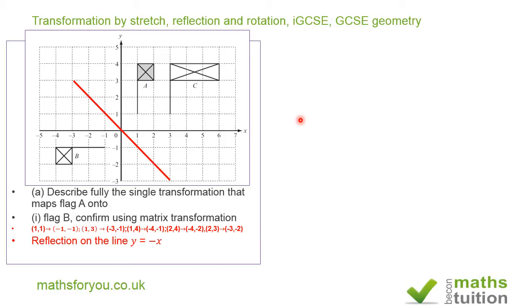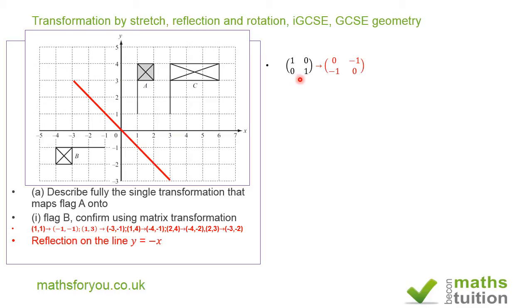To confirm this using a matrix: we use the standard 2×2 identity matrix. The point (1, 0) is on the object, and we track where the basis vectors map under this transformation.